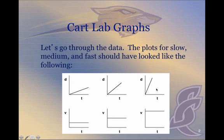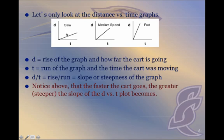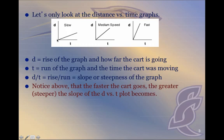Let's start by looking at the distance versus time graphs. For your slow, medium, or fast plots, they all have the same quantity rising — in this case, distance. The rise of each graph is the distance, and the run of each graph is the time the carts were running under the photo gates. We can calculate the slope of these plots by taking rise over run: delta d, the change in distance, divided by delta t, the change in time.